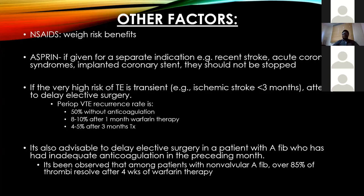In very high thromboembolic risk patients where the risk is transient — for example, ischemic stroke within the last three months — attempt to delay elective surgery. Perioperative VTE recurrence rates in patients not on anticoagulation is 50%; in patients on warfarin for one month the risk reduces to 8–10%; and in patients on warfarin for at least three months, the risk reduces almost tenfold to 4–5%. We should delay elective surgeries until the benefits of anticoagulation have been achieved. Over 85% of thrombi in non-valvular AFib resolve within four weeks of warfarin therapy.